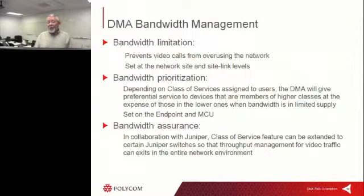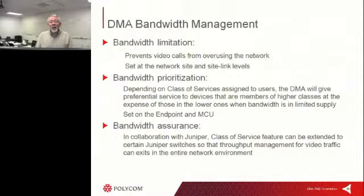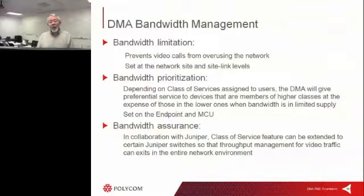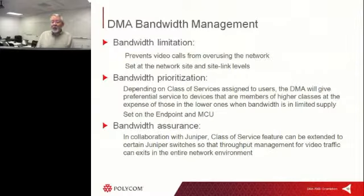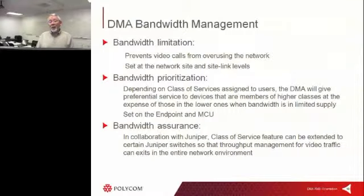DMA also has the ability, working with our Juniper partner, of doing some bandwidth assurance. It allows us to make sure that the bandwidth is available and crosses with priority all the way through a Juniper-defined network. It does work with Juniper only at this point in time, but it is a good way to set priorities all the way across your network.